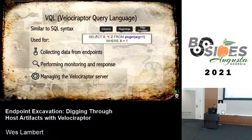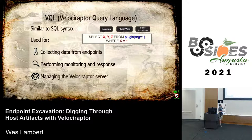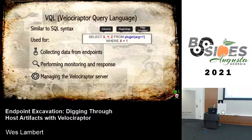Behind Velociraptor is a core language called VQL. This language is very flexible and very powerful — it's used for everything in Velociraptor: collecting data from endpoints, performing monitoring and response, and managing the server. You'll see VQL used throughout the artifacts, for example listing files, managing disk space, and collecting data from endpoints.